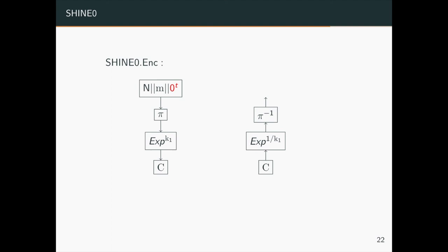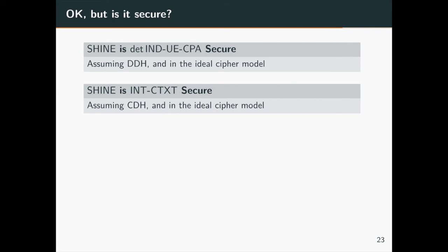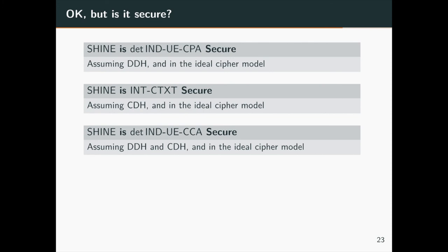To achieve ciphertext integrity for our UE scheme, we pad a large zero block in the encryption. The decryption algorithm checks if the permutation output ends with the zero block; if not, the input is an invalid ciphertext. The probability that an adversary can create a new valid ciphertext is negligible. Thus SHINE is CTXT secure, and combining the generic composition result, SHINE is IND-UE CCA secure.